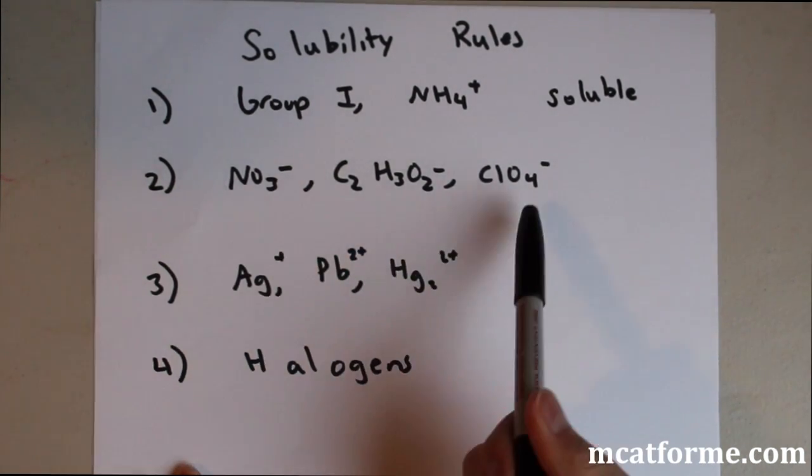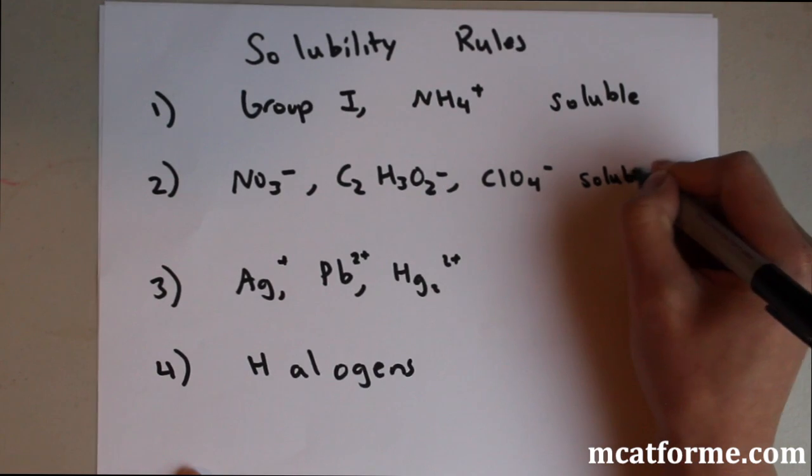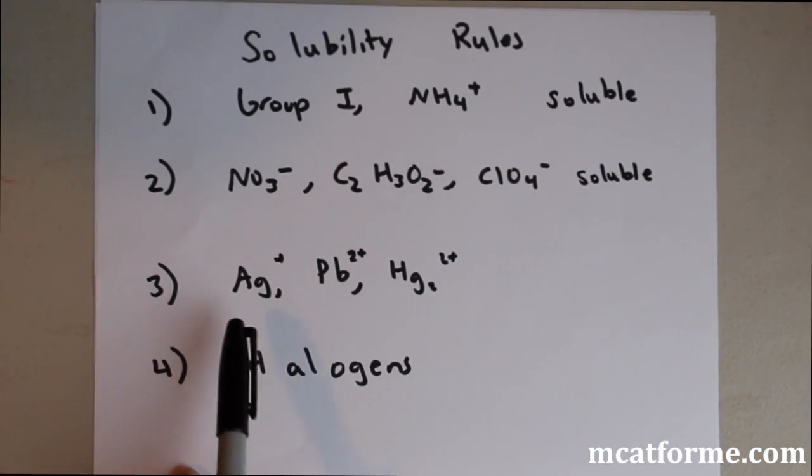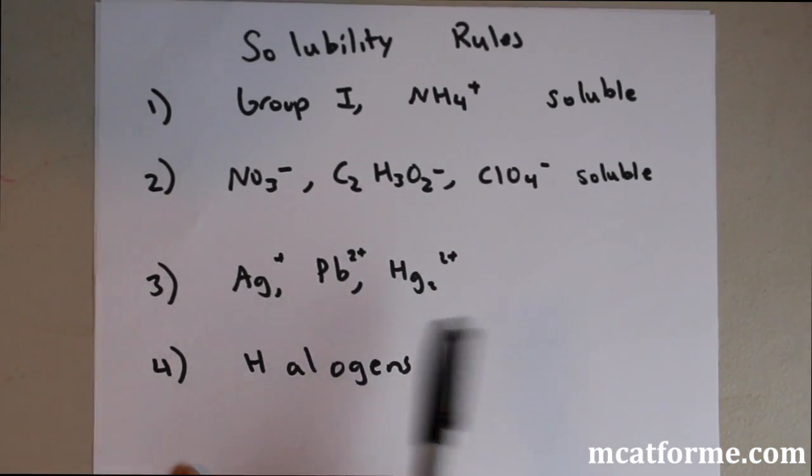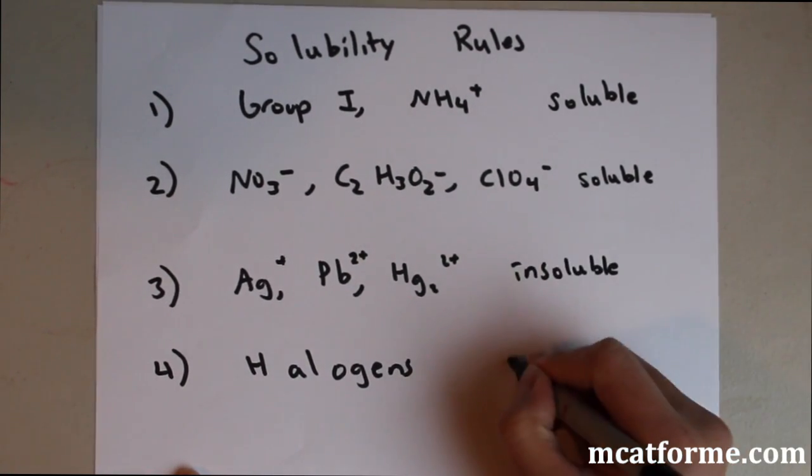Nitrate, acetate, and also the chlorate ions are also going to be soluble. Silver, lead, and mercury are going to be insoluble. And the halogens are going to be soluble.